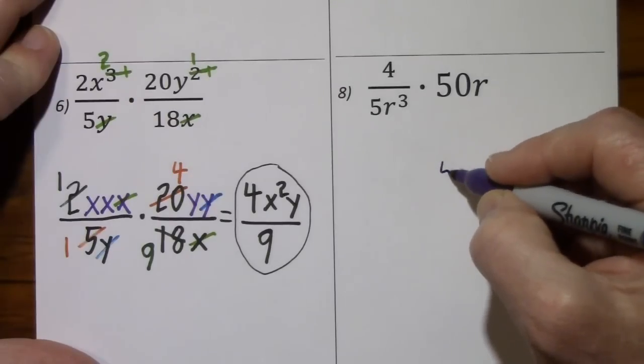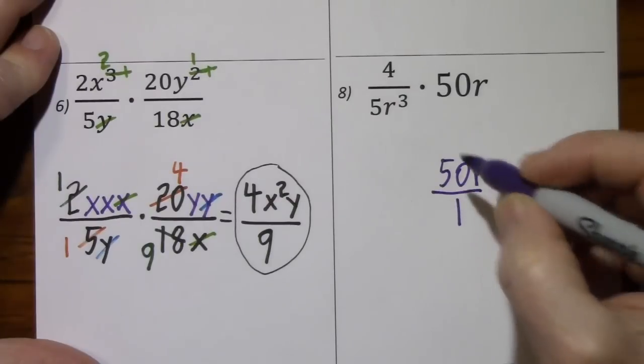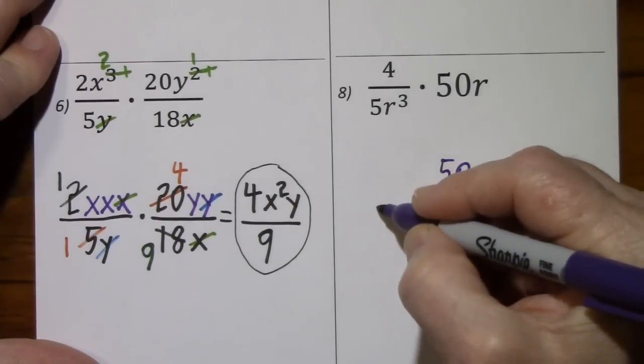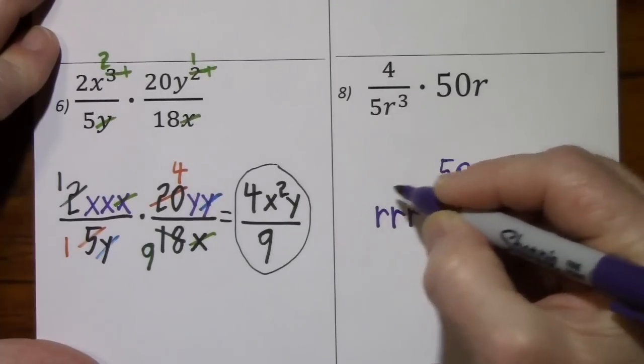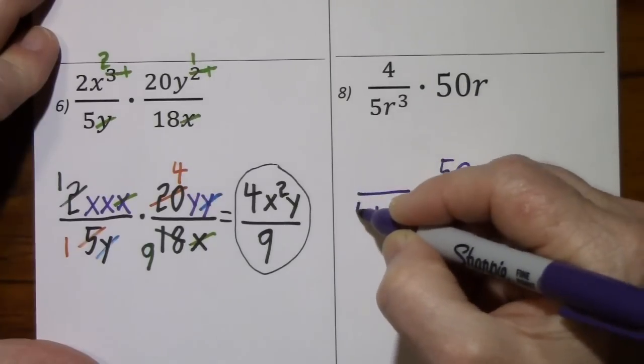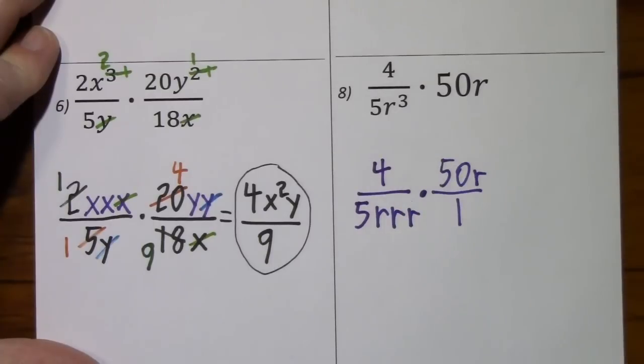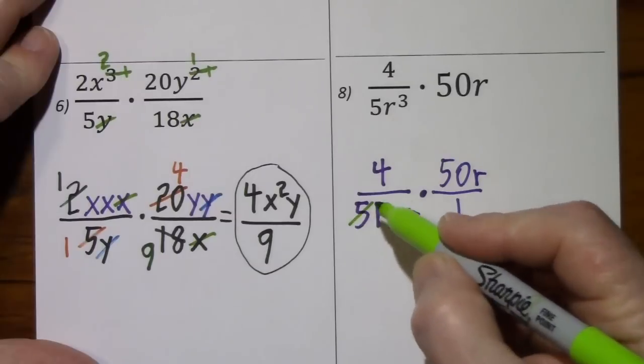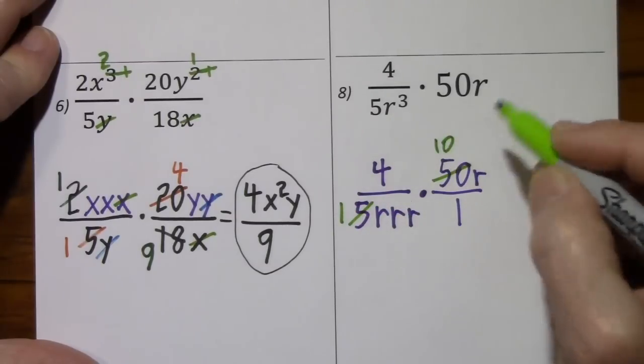50r, we have to put that over a one. r to the third. And let's see what we can simplify. Five goes into five once, five goes into 50, ten times.